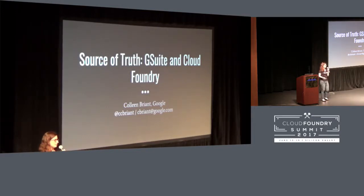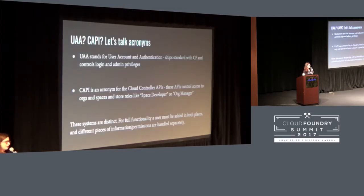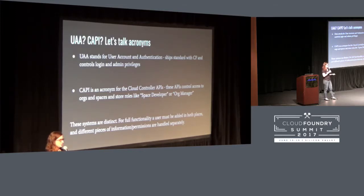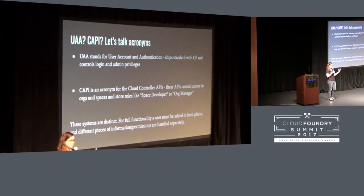We're going to talk about the work that's planned and started right now integrating G Suite — which you might also know as Google for Work — with Cloud Foundry authentication and permissions. Just to level set on some acronyms: UAA is User Accounts and Authentication, and this is a default that ships with Cloud Foundry for managing your user logins. The permissions that your Cloud Foundry developers use day to day are managed through the Cloud Controller APIs, commonly abbreviated as CAPI.